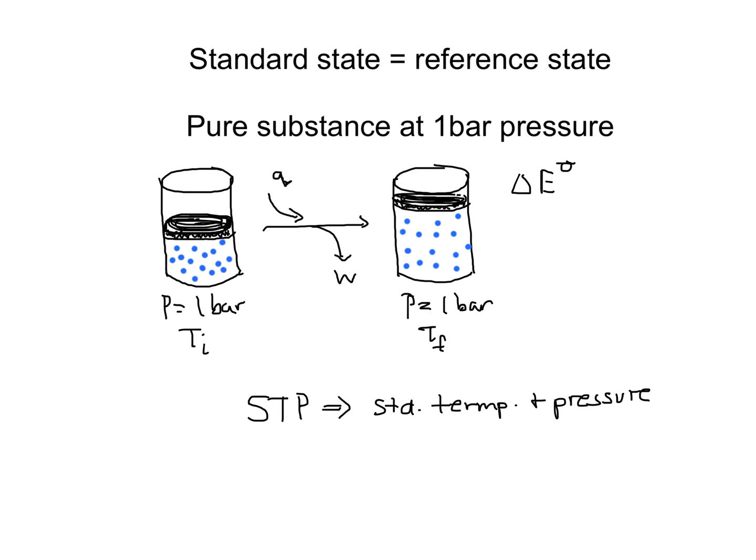A small circle, superscript circle with a line through it indicates that this change has been done at standard state.